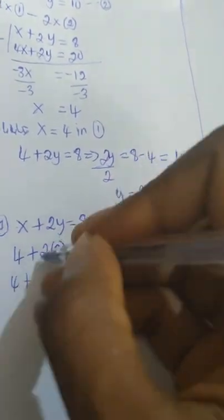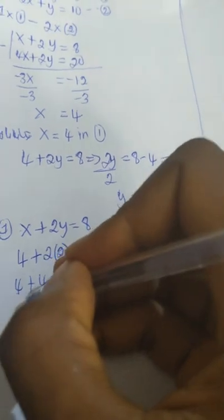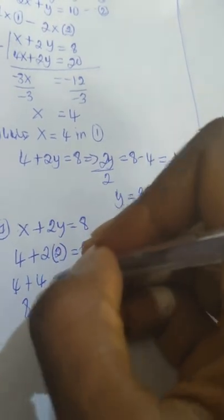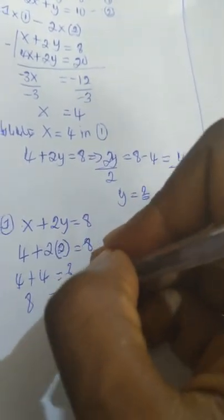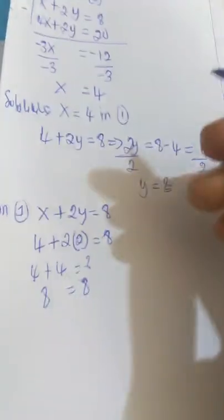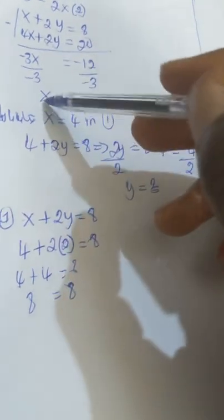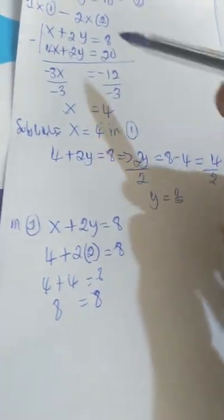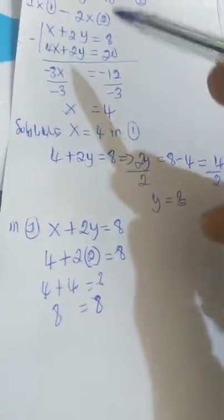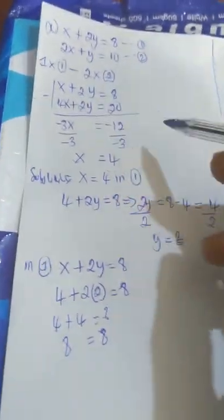We have 4 plus 2 times 2 is 4, and 4 plus 4 gives you 8. So 8 is equal to 8 — the left-hand side is equal to the right-hand side. That tells us that x equal to 4 and y equal to 2 satisfies the equation, so that is correct.